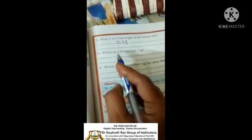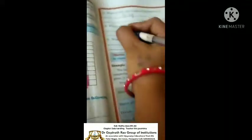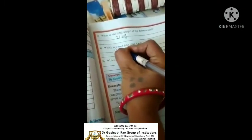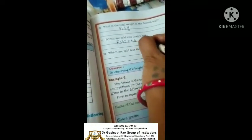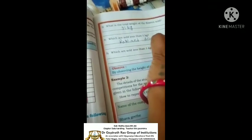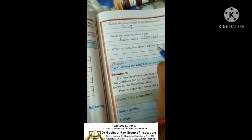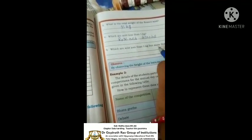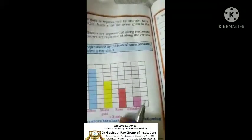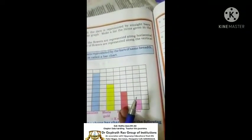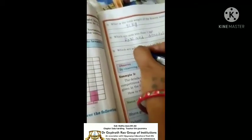Which are sold less than 5 kgs? Rose and dinder, which are sold less than 5 kgs. But more than 2 kgs? More than 2 kgs is rose.